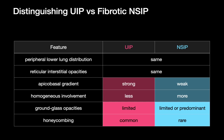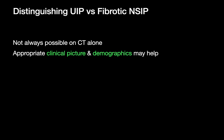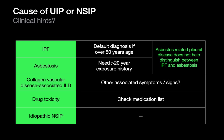Both UIP and NSIP are lower lung predominant with reticular interstitial opacities. The apical-basal gradient favoring the lower lungs is probably a little more conspicuous in UIP than NSIP. Involvement is a little more homogeneous in NSIP. Ground glass opacities can really predominate in some NSIP cases — something we don't see as much in UIP. Honeycombing can occur with both, but it's much more common in UIP and quite rare in NSIP. It's not always possible to distinguish one from the other, and ultimately many cases may not be resolved without a surgical biopsy.